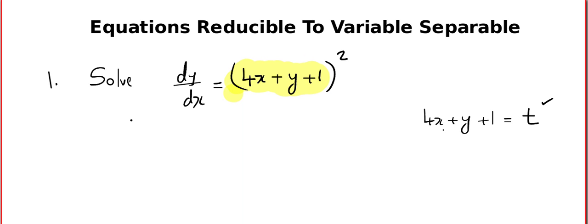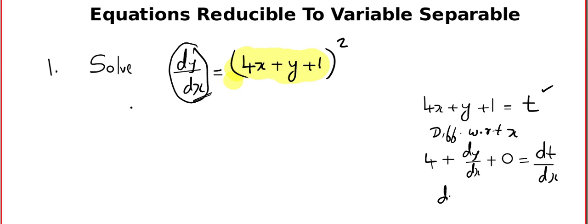Now, what you do is you differentiate throughout with respect to x. We know that we have to differentiate with respect to x because I saw dy/dx. So we get 4(1) + dy/dx + 0 = dt/dx. Now you tell me what will be dy/dx from here. So dy/dx will be dt/dx - 4.